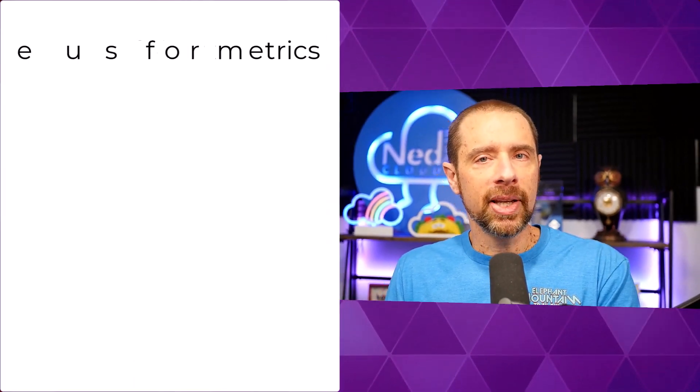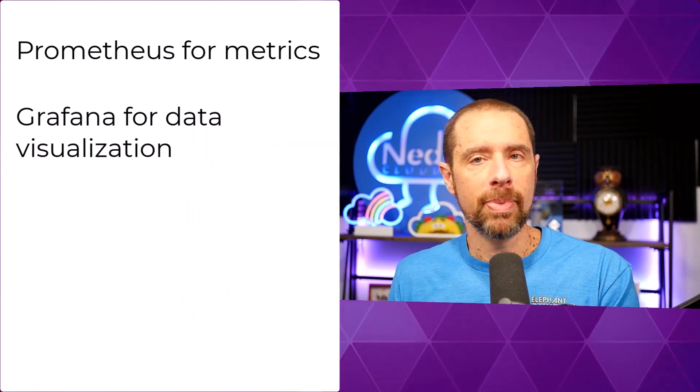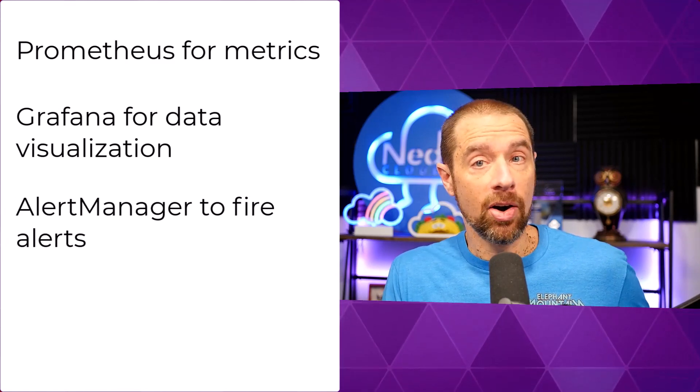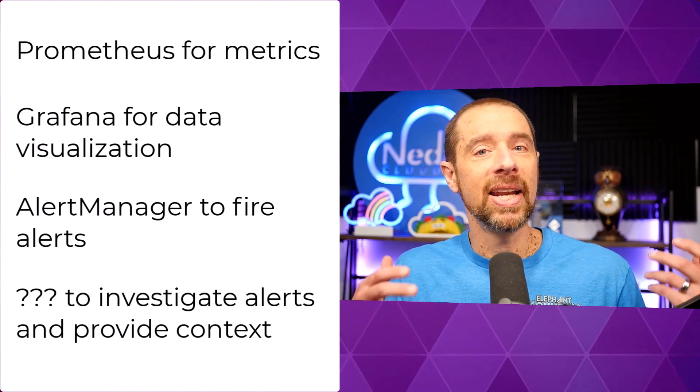A lot of the solutions out there try to do everything for you, and that usually means they don't do any of it particularly well. What I like about the Kubernetes and Linux approach is that they try to do the same thing by stringing multiple tools together that each do their individual job extremely well. So what are the common monitoring tools in the world of Kubernetes? Typically you'll find Prometheus to collect metrics, Grafana to visualize those metrics, Alert Manager to fire off alerts, and then something to investigate those alerts and provide additional context.